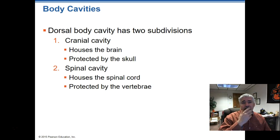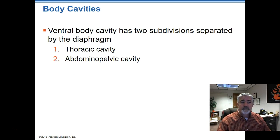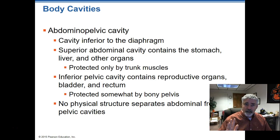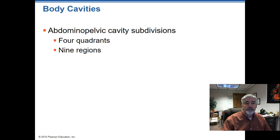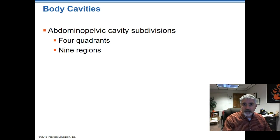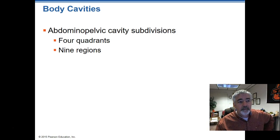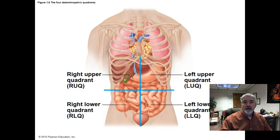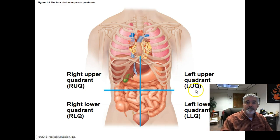The dorsal cavity has two subdivisions: cranial, which contains the brain, and spinal, which contains the spinal cord. The ventral cavity has two subdivisions: the thoracic and the abdominal pelvic. The thoracic houses the heart and lungs. The abdominal pelvic has all the other organs and can be further divided into abdominal and pelvic as we see in the picture. Interestingly, we can also divide the abdominal pelvic cavity into four quadrants or nine regions — very beneficial when documenting something related to the abdomen, because we can further pinpoint where we're talking about.